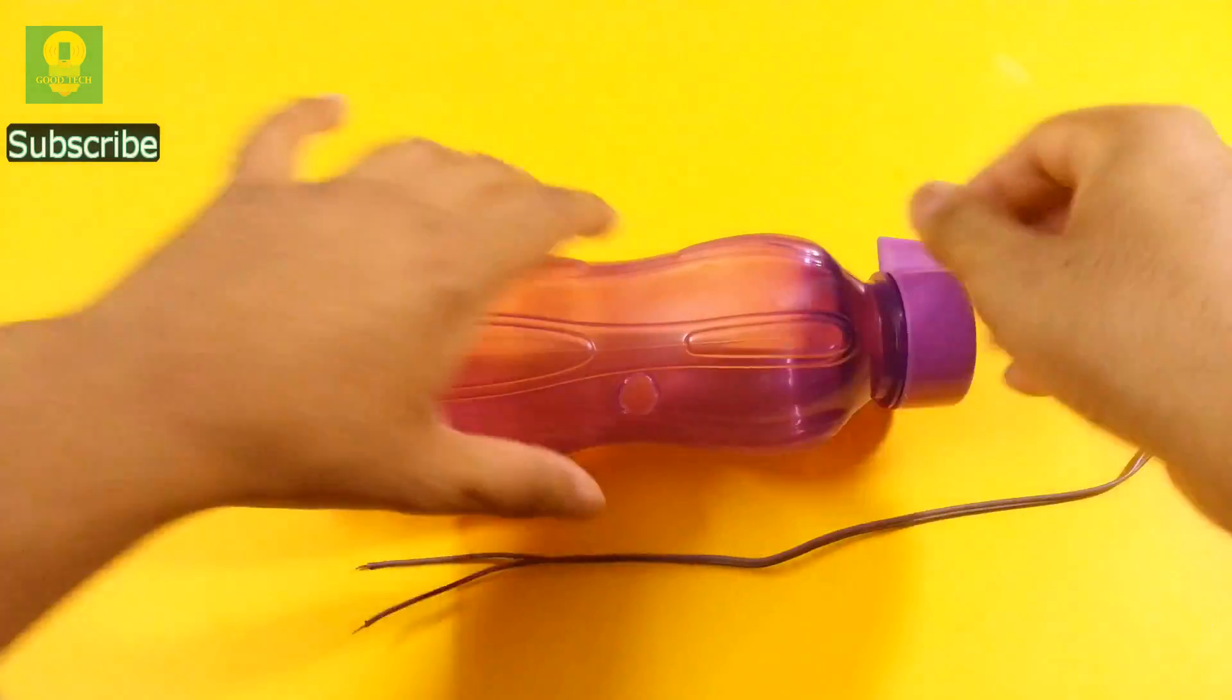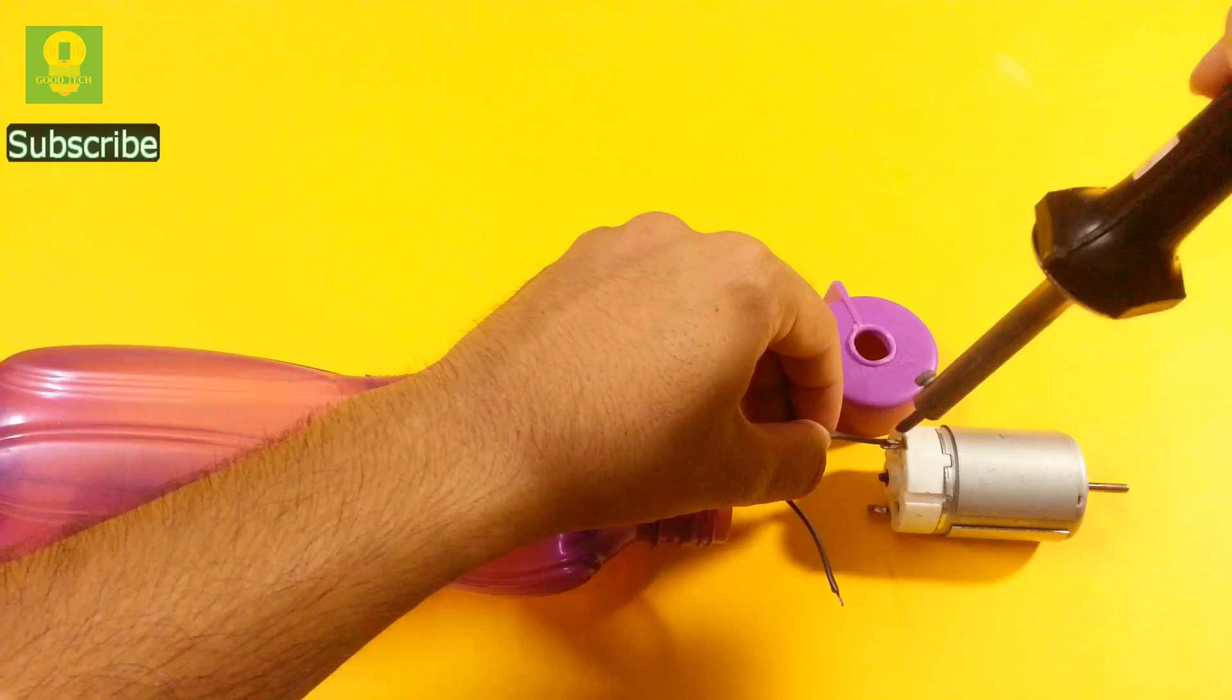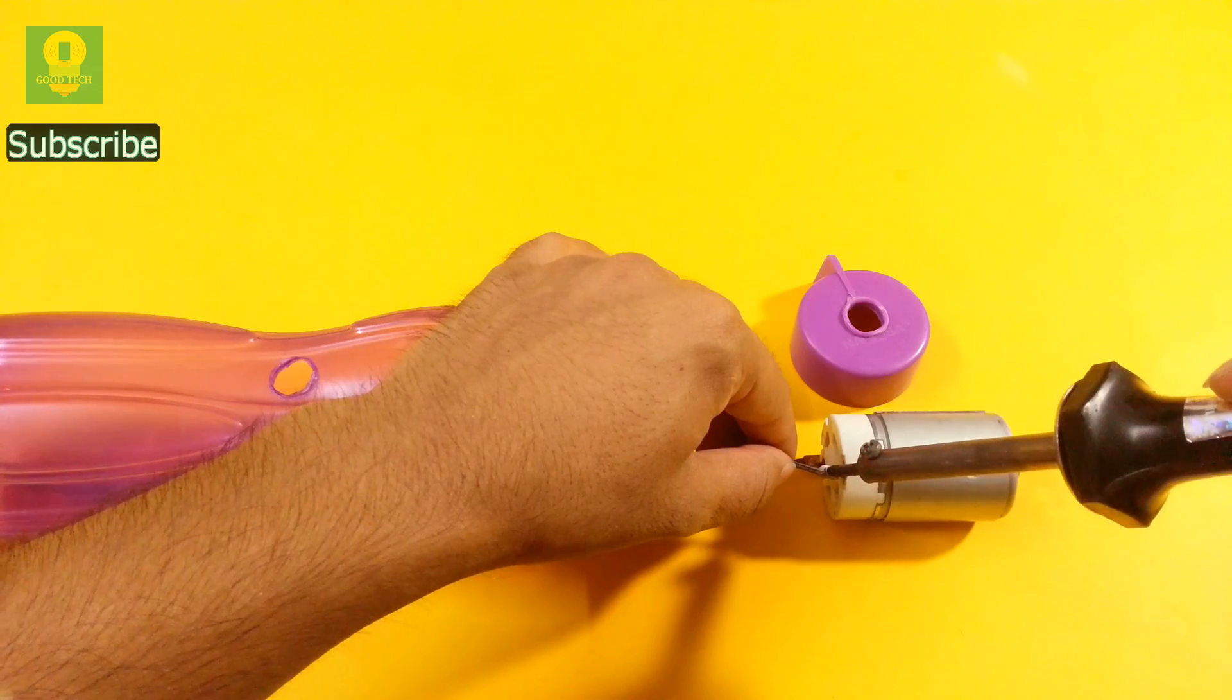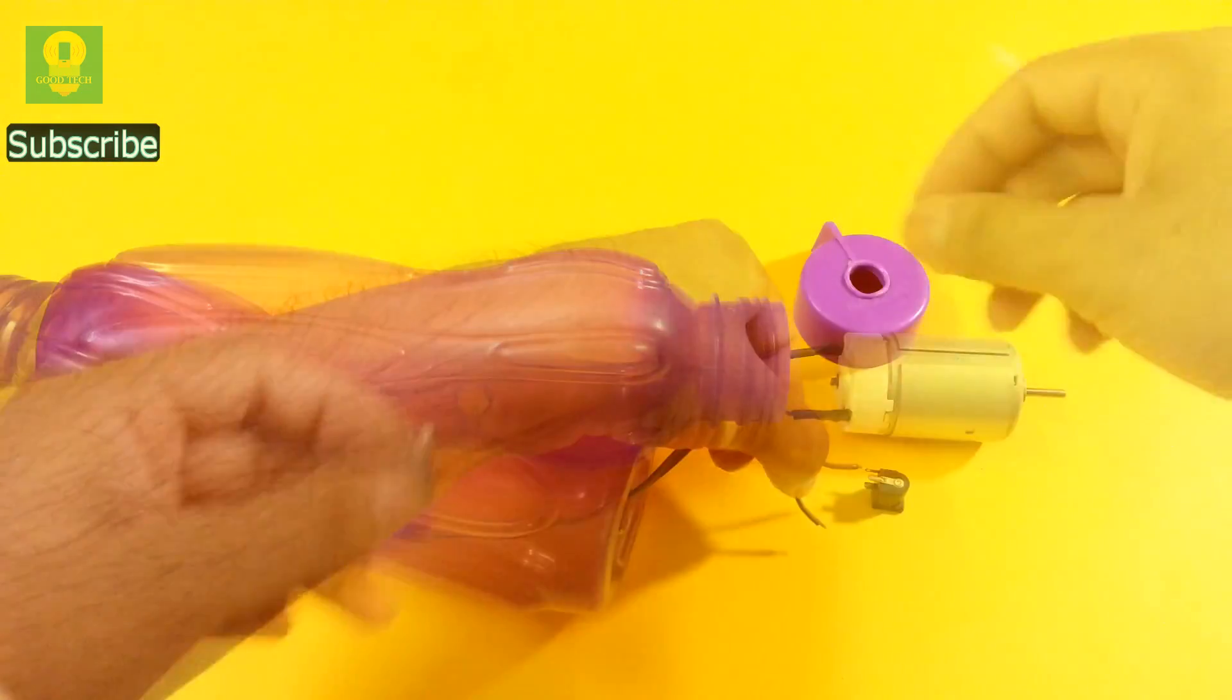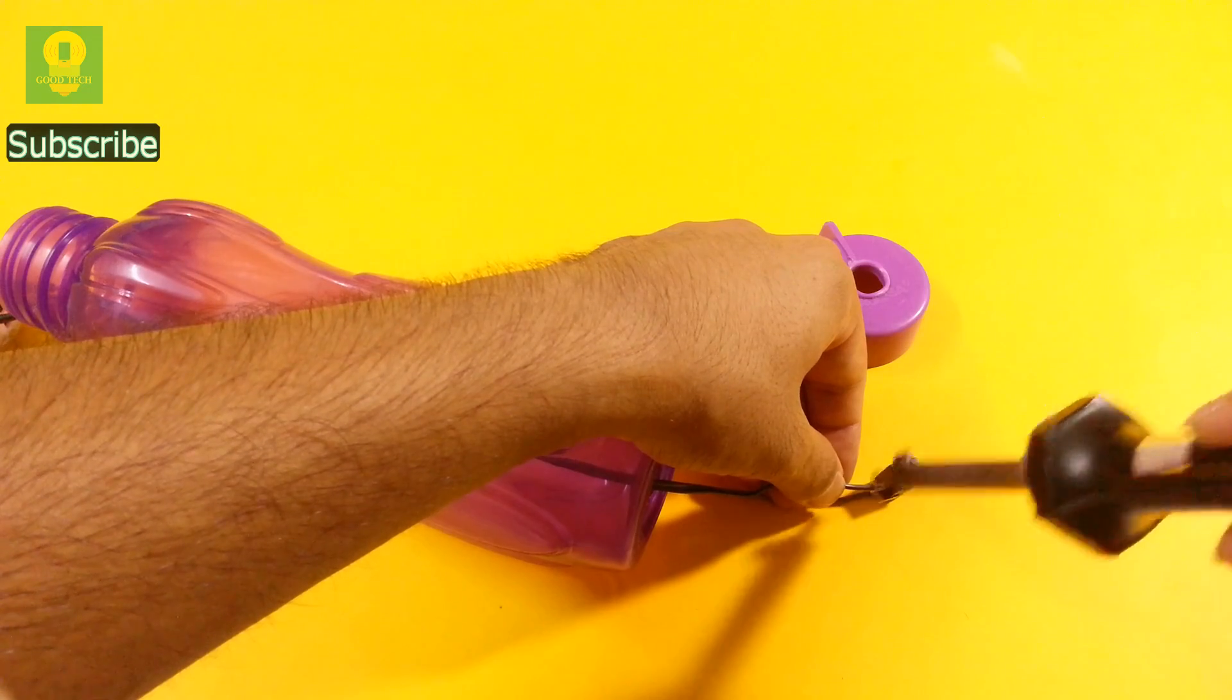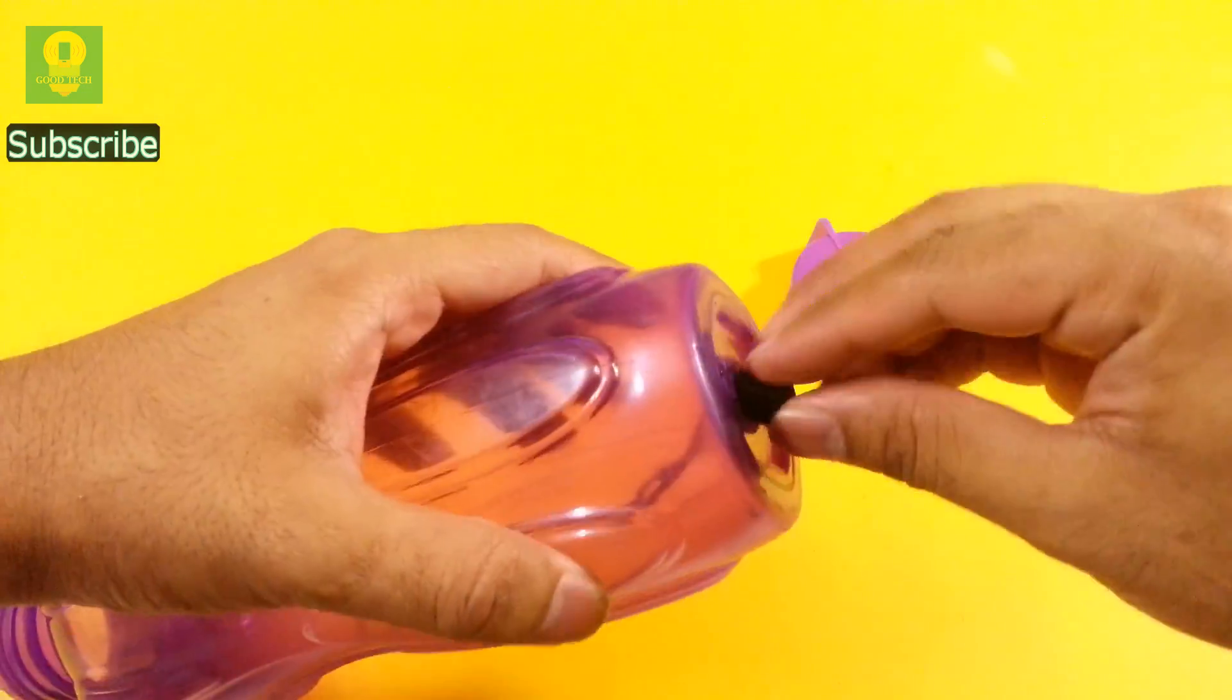Take a piece of wire and insert it through the bottle like this. Solder the wire to the motor terminal. Take a DC adapter jack and solder the wire from the jack. Apply some hot glue and fix the jack at the bottom of the bottle.